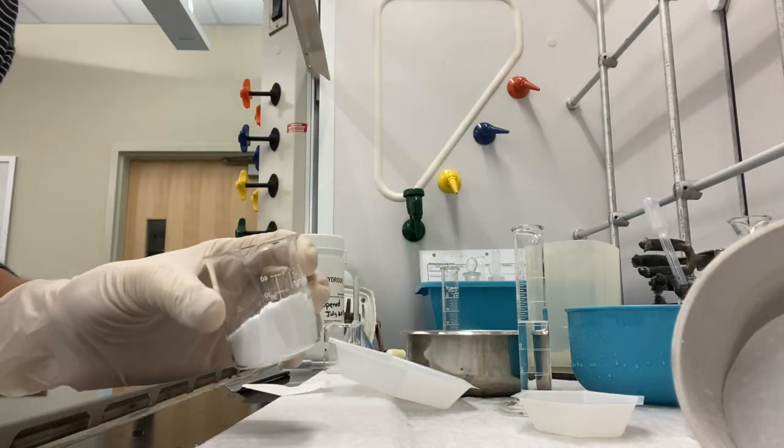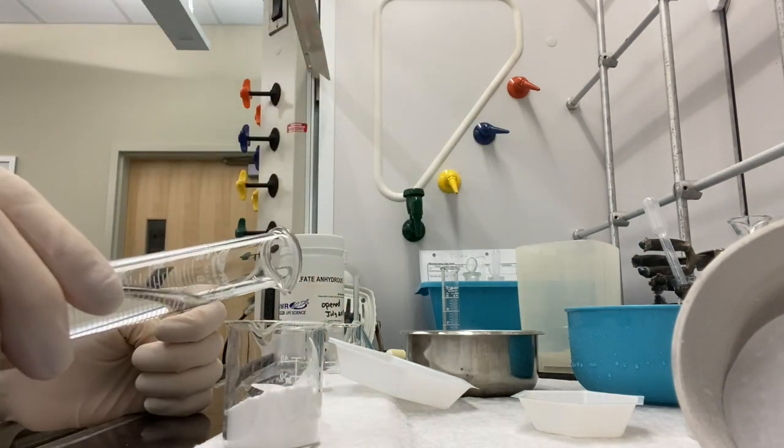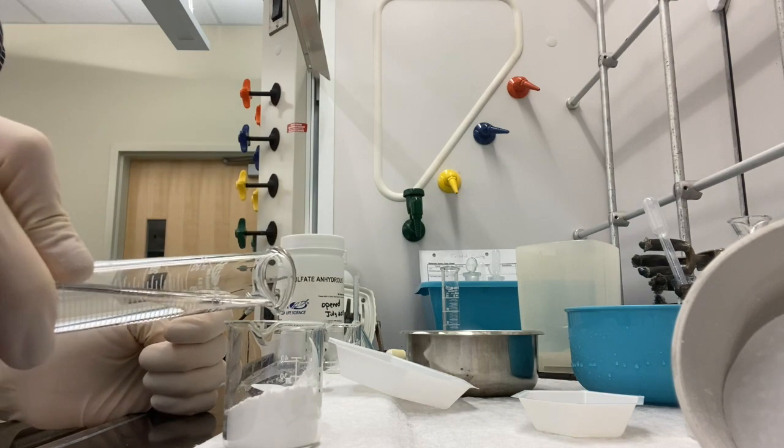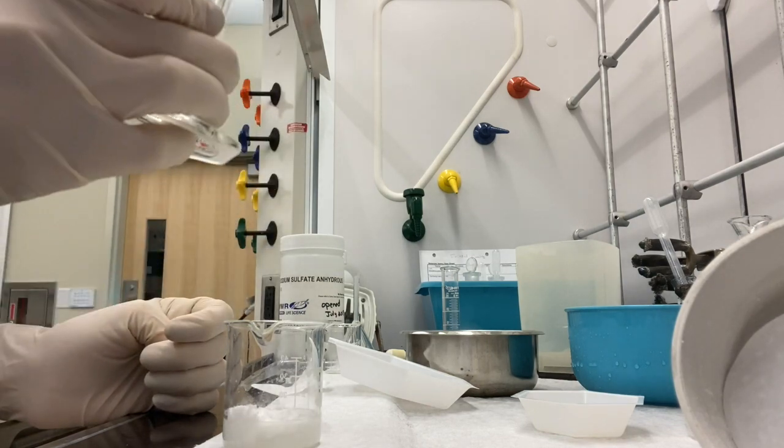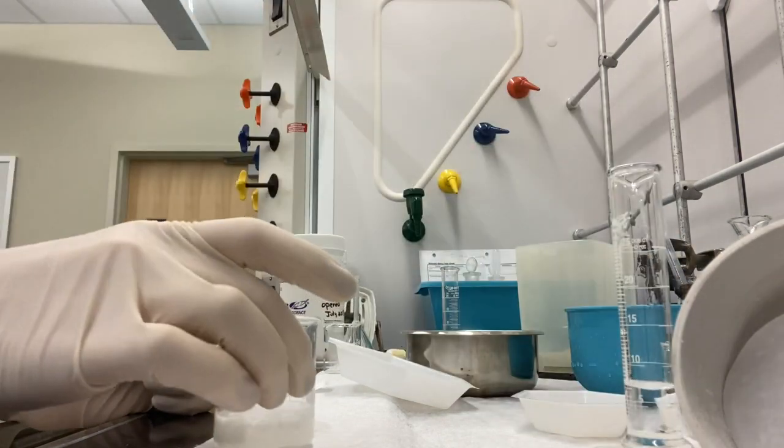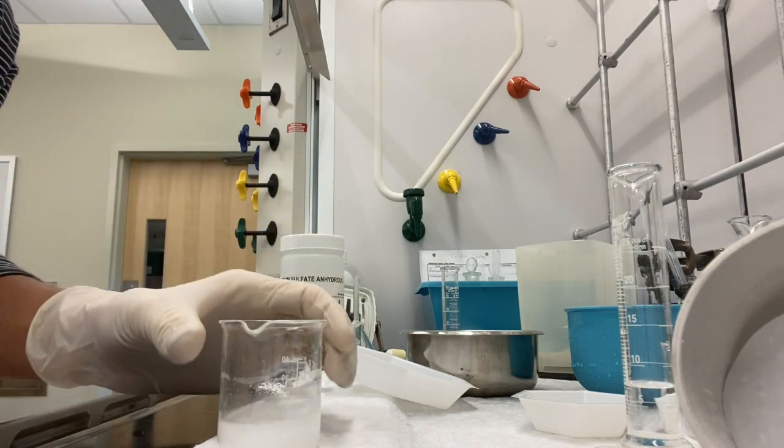So the next direction says to dissolve your solid in some dichloromethane. So that's what I have here in this graduated cylinder. So I'll take my dichloromethane and just pour it in here to dissolve my solid. And it dissolves pretty fast.